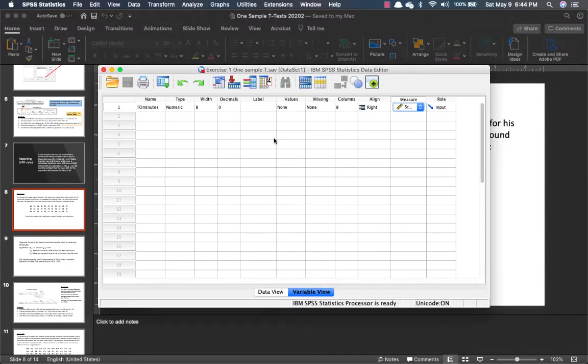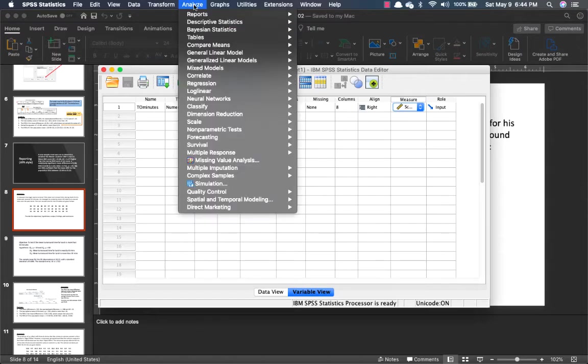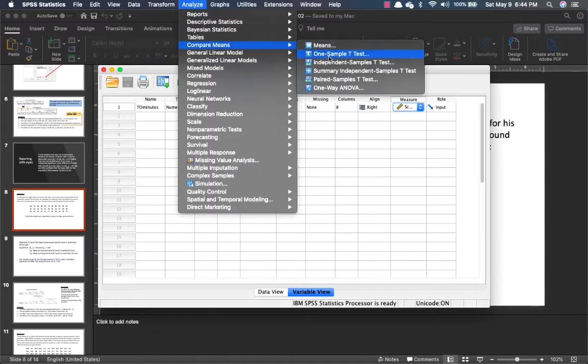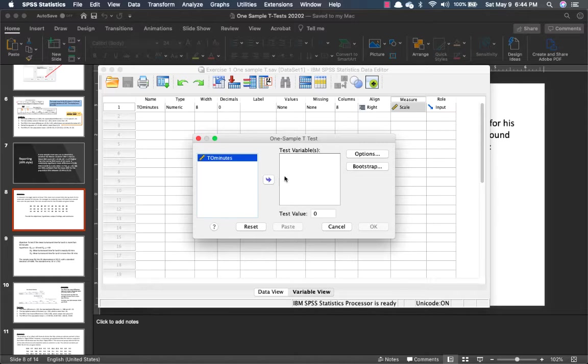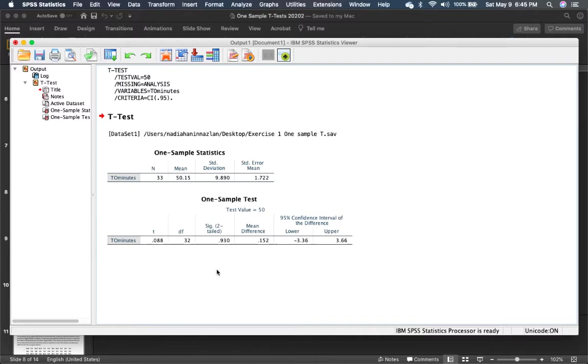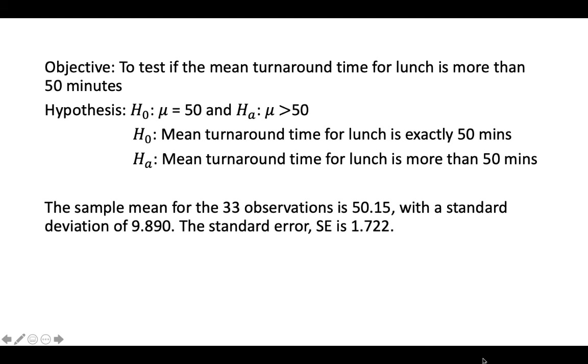So I have already inputted the data in my SPSS. You click on analyze, again compare means and this is a one-sample T. We want to test if it's more than 50 minutes, right? So click in 50 and run. So that's the results over there. Very easy, right? If you can see, so mean is 50.15. It's not far away from the hypothesized mean, right? So therefore, you can see here it is not significant. So here's the objective and the hypothesis.